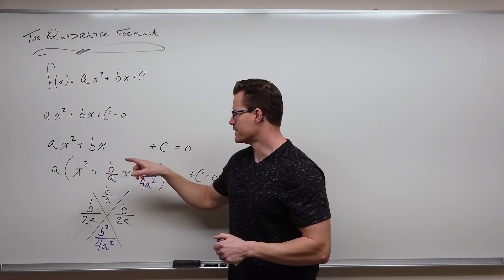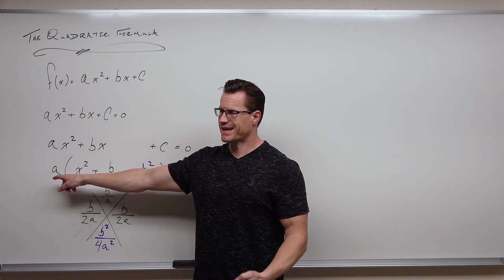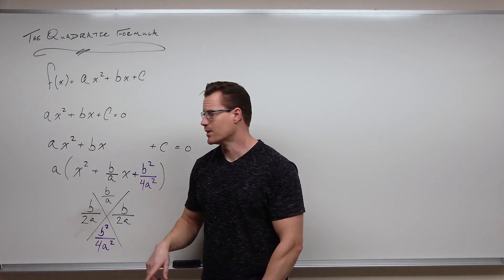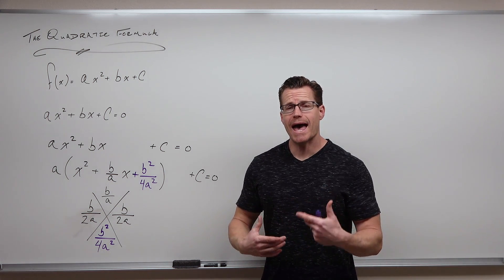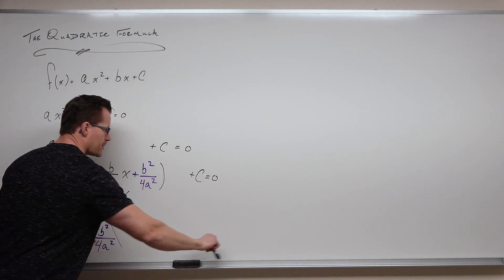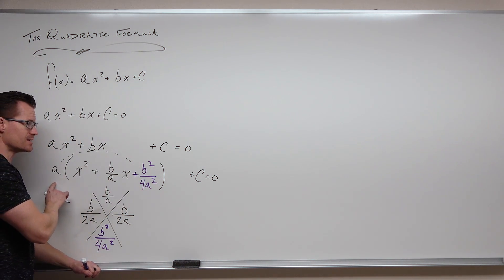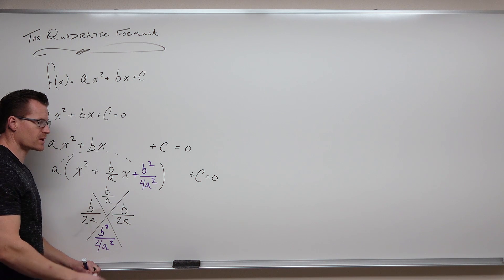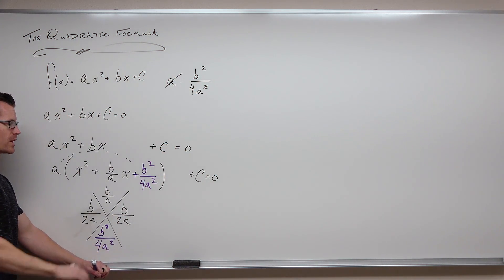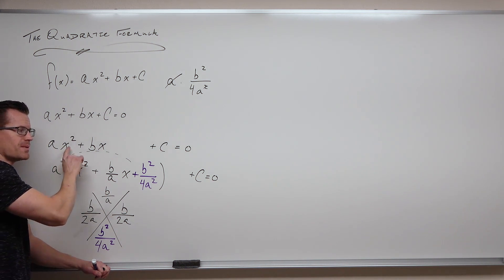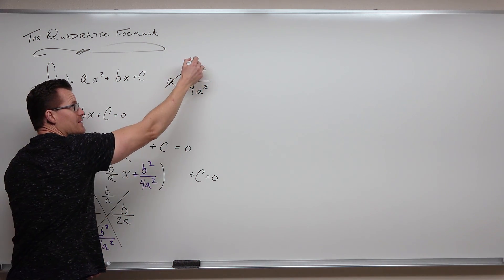There are a couple things we can do with this a — we could divide here and here and here, or we could leave it and divide it later. I'm going to leave it because that's the technique I showed you in the last video. But there is a little issue: we added b²/4a² inside this expression. Because this is multiplied by some number a, we have to undo this with the distribution. So a times b²/4a² = b²/4a. So notice: I added b²/4a² inside, but after distributing, the effective addition is b²/4a. That's what we're undoing.